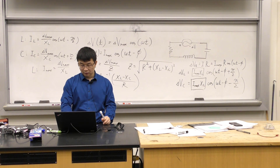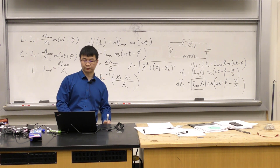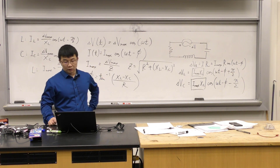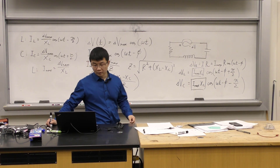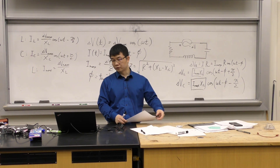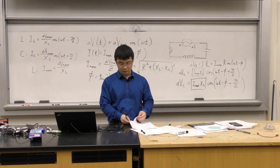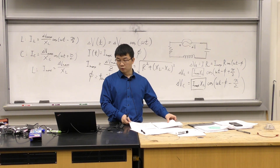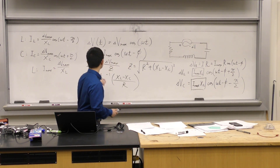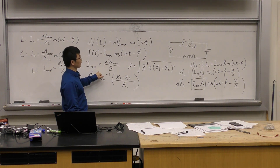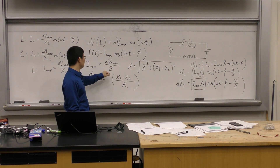Let's practice with the problem from lecture 18, slide 12. We have a series RLC circuit with all three elements connected to an AC source at 60 Hz, VMAX = 150 V. We want to find the current at t = 4 milliseconds. To do that, we use the current equation and find IMAX, which equals VMAX divided by Z.